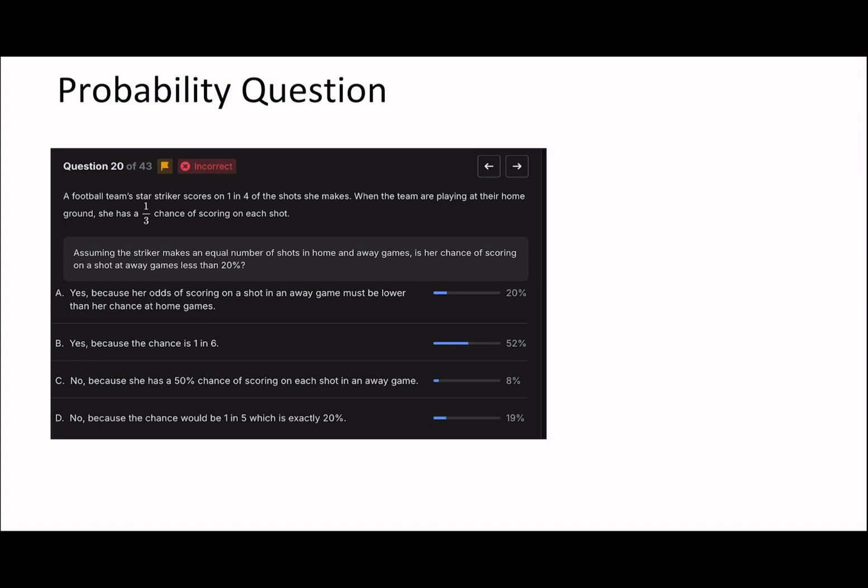So assuming this driver makes an equal number of shots in home and away games, is the chance of scoring on a shot at an away game less than 20%? So they make equal number of shots in home and away games. So I guess the first thing is making a shot. So making a shot, that's 50% here and 50% here. So this is home, this is away.